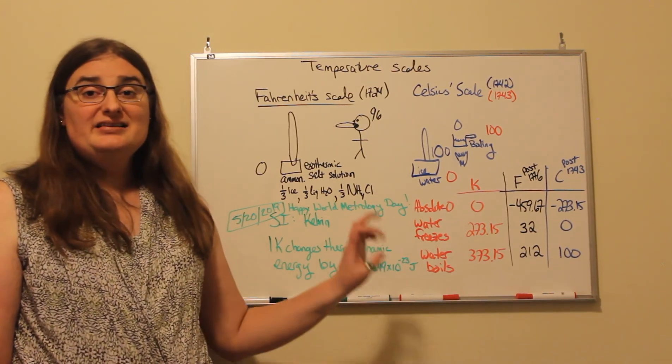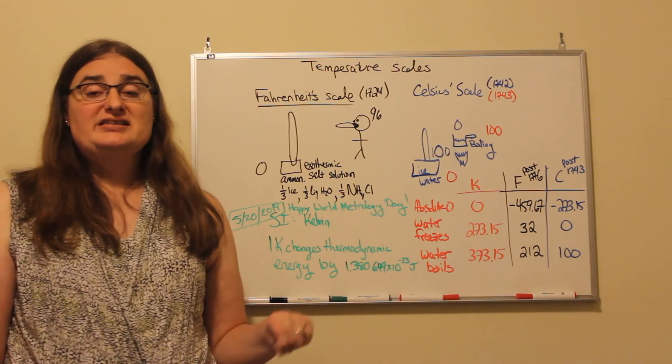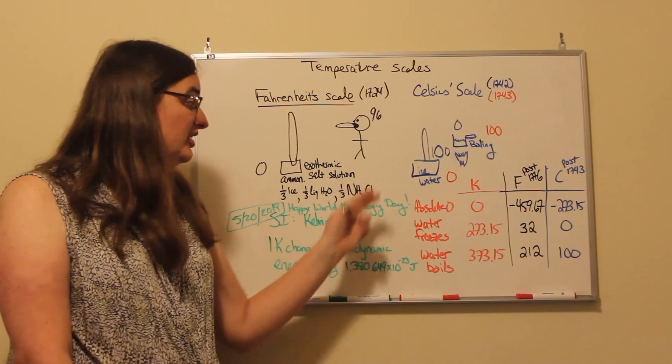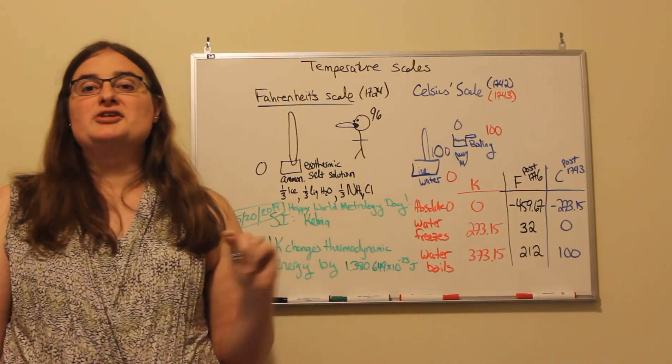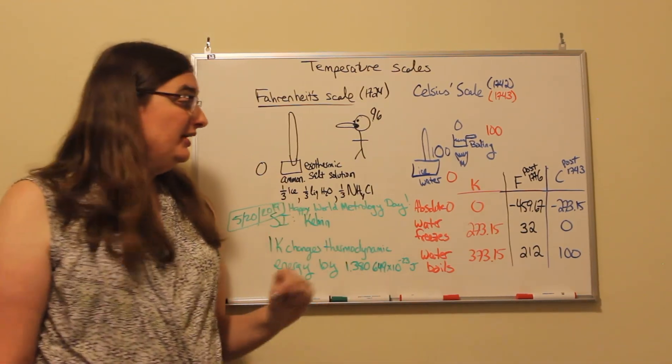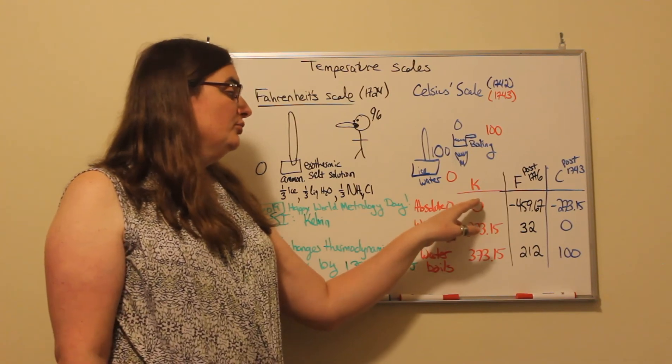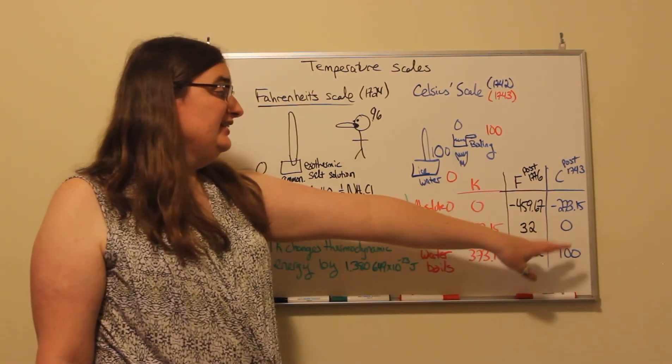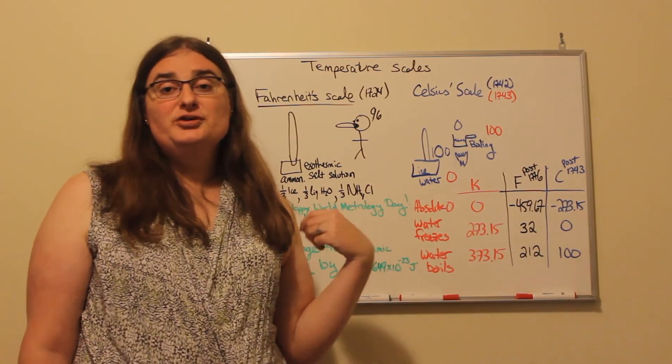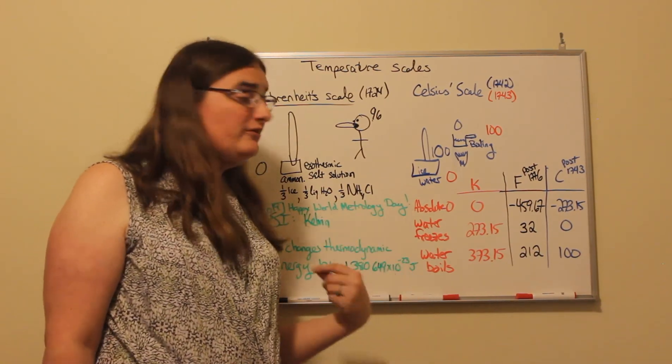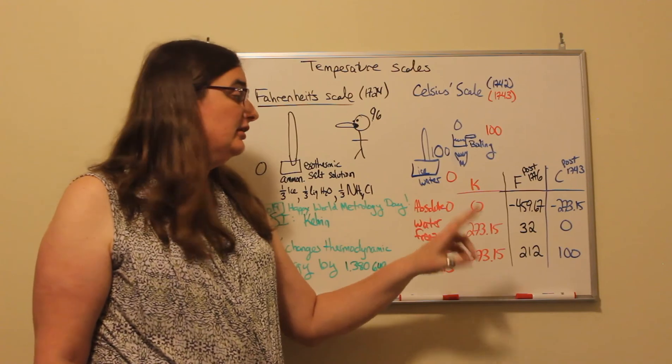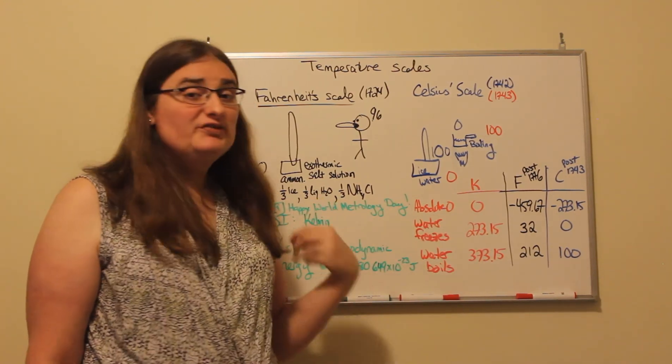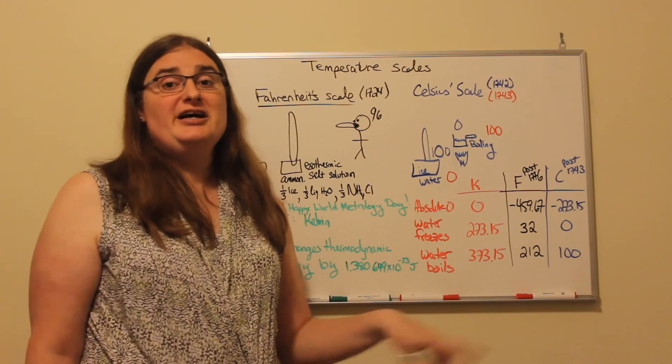The nice thing about Kelvin is it is an absolute energy scale. In classical physics, zero Kelvin would correspond to zero thermodynamic energy. So we start at zero, work our way up. That means the Celsius scale ends at 273.15 below zero, and the Fahrenheit scale ends at negative 459.67 Fahrenheit below zero.